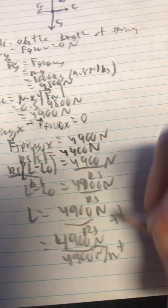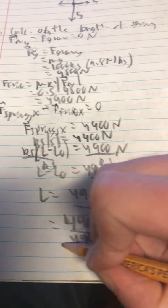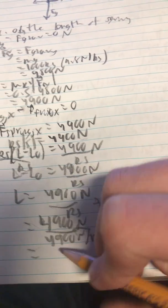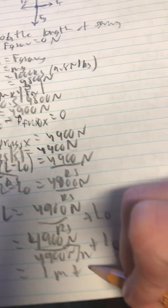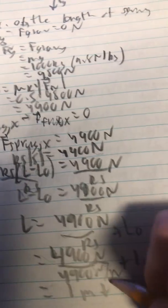And very conveniently the spring stiffness is exactly the same number, so it makes our calculations easier. So that will be 1 meter plus the relaxed length of 4 meters.